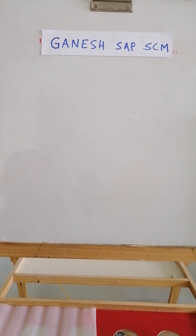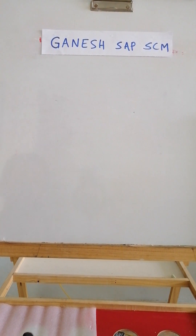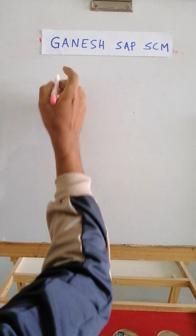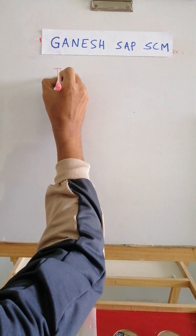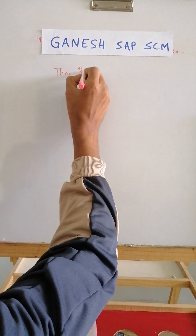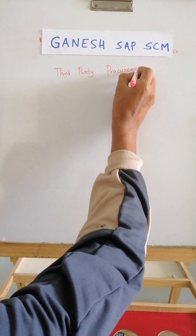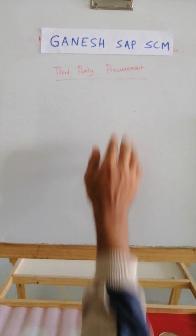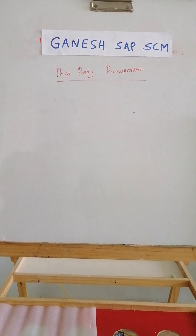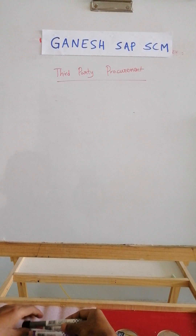Hi, good morning everyone. I hope all of you are doing good. You would have watched our previous whiteboard video where I covered a few scenarios. Today we are going to discuss the business process of third-party procurement — what are the three parties involved, the benefits to the company, and the steps we need to follow.